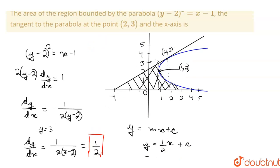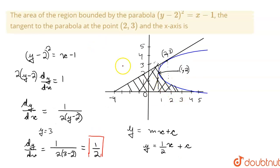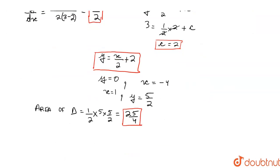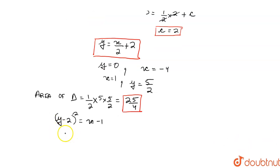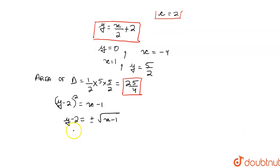Now we remove the bottom part, which is the parabola region. Our parabola equation is (y−2)² = x−1. We open it to get y − 2 = ±√(x−1). We write y in terms of x, taking the relevant branch: y = 2 + √(x−1).